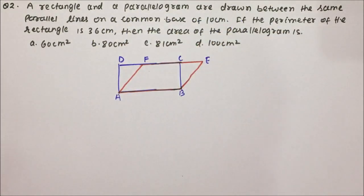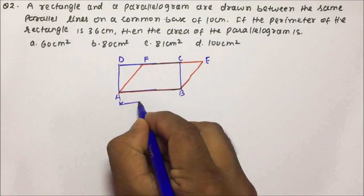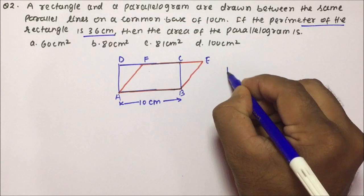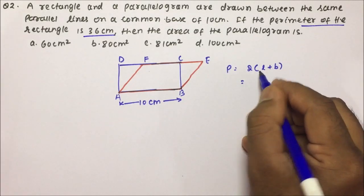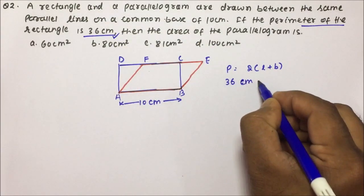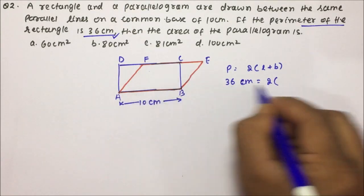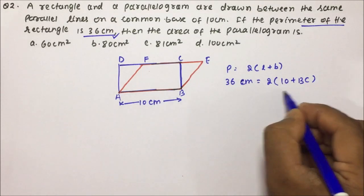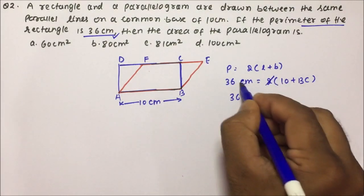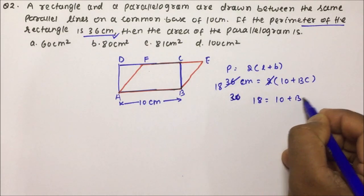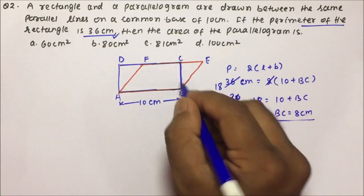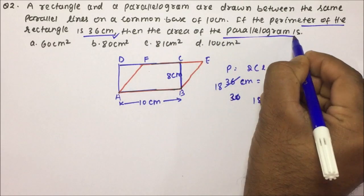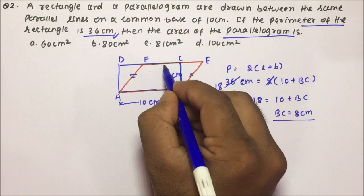A rectangle and a parallelogram are drawn between the same parallel lines on a common base of 10 centimeters. The perimeter of the rectangle is 36 centimeters. Perimeter = 2 × (length + breadth), so 36 = 2 × (10 + BC), giving 18 = 10 + BC, so BC equals 8 centimeters. We have the breadth as 8 centimeters.